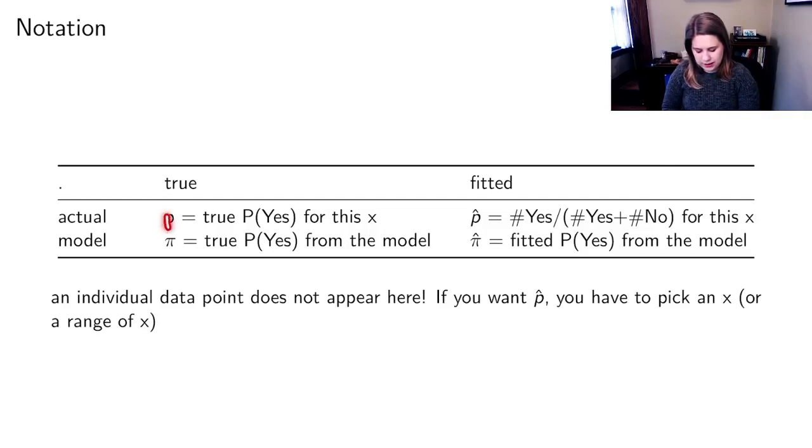p is equal to the true probability of yes for a particular x, and then we have our fitted p-hat which is the number of yeses over the total number for that particular x.